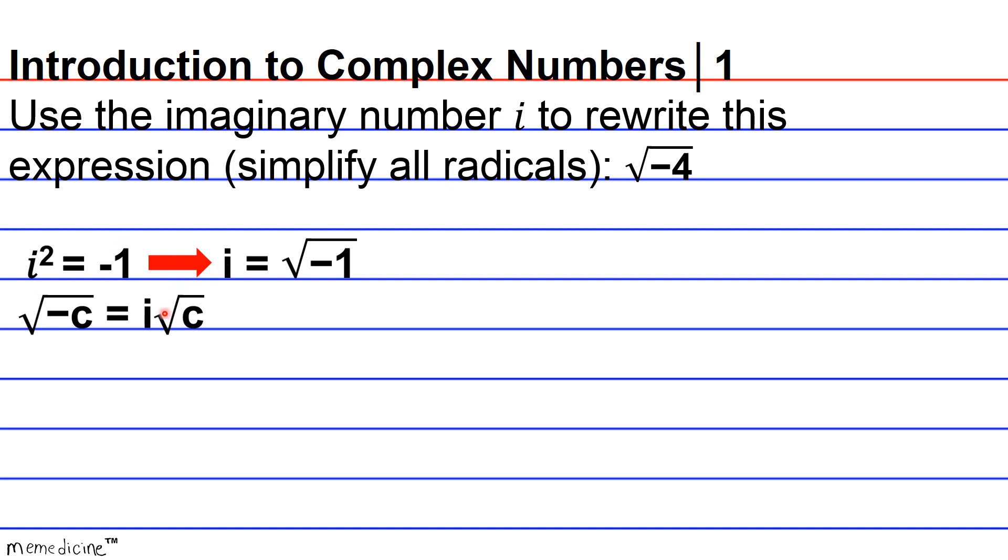So basically all you're doing is factoring out i whenever you see a negative square root, and then you're left with your real portion, at which point you can identify a principal square root.